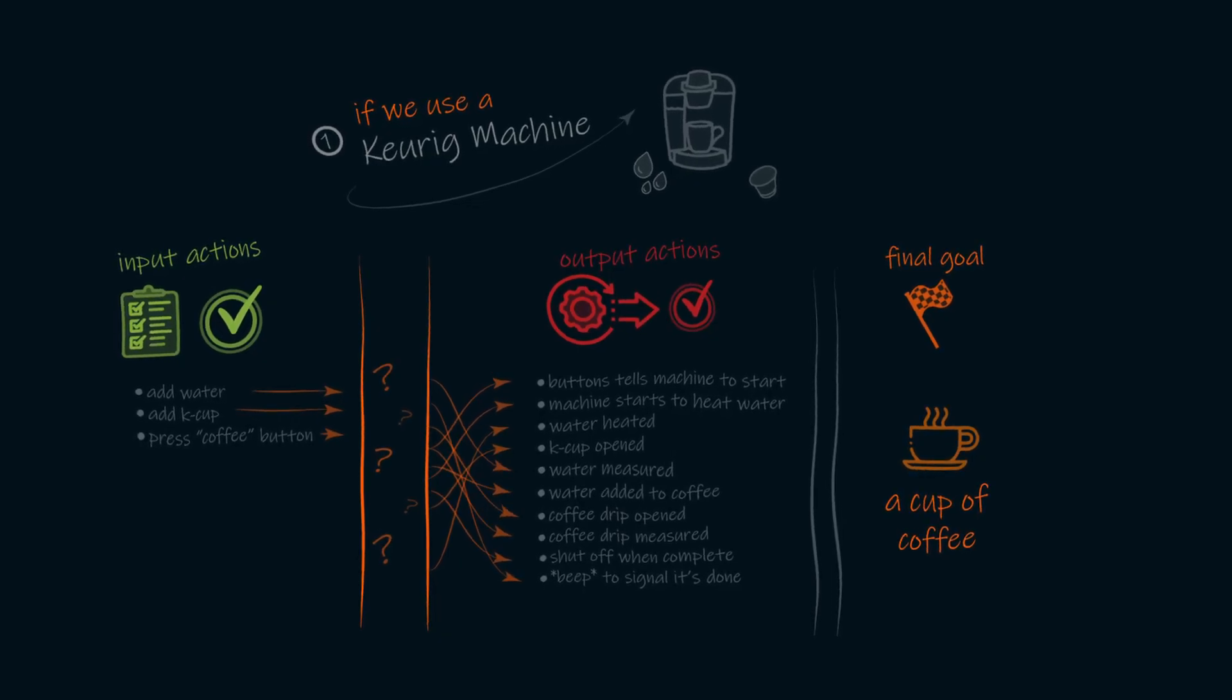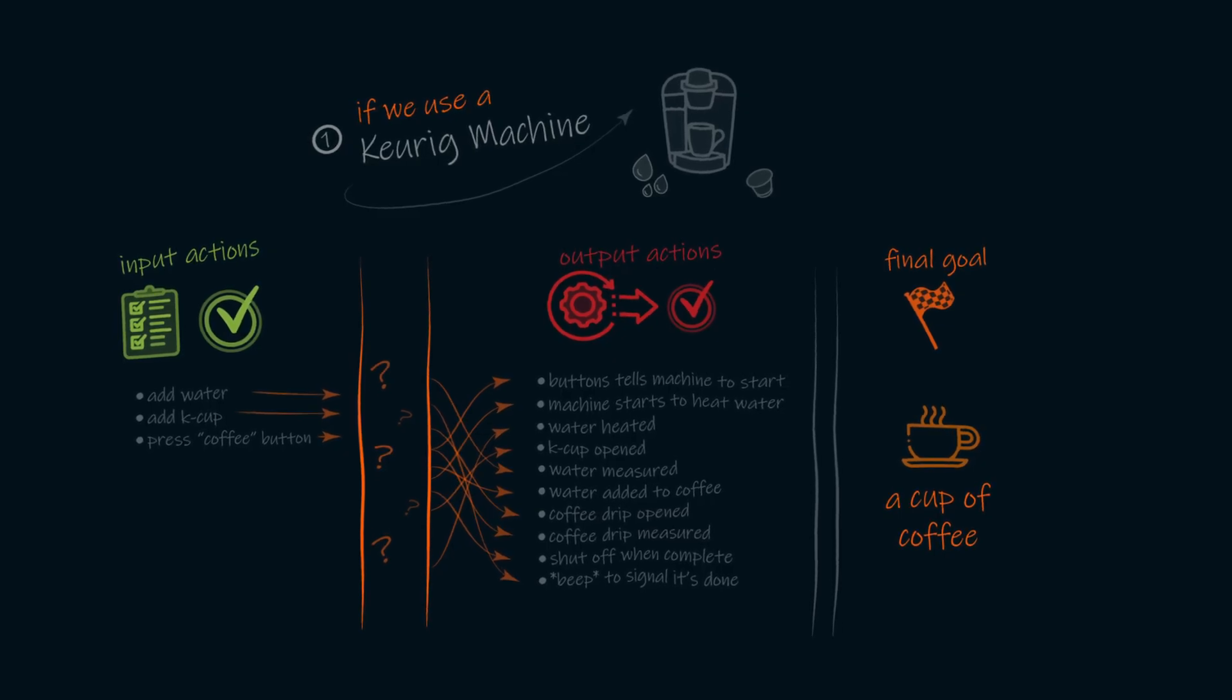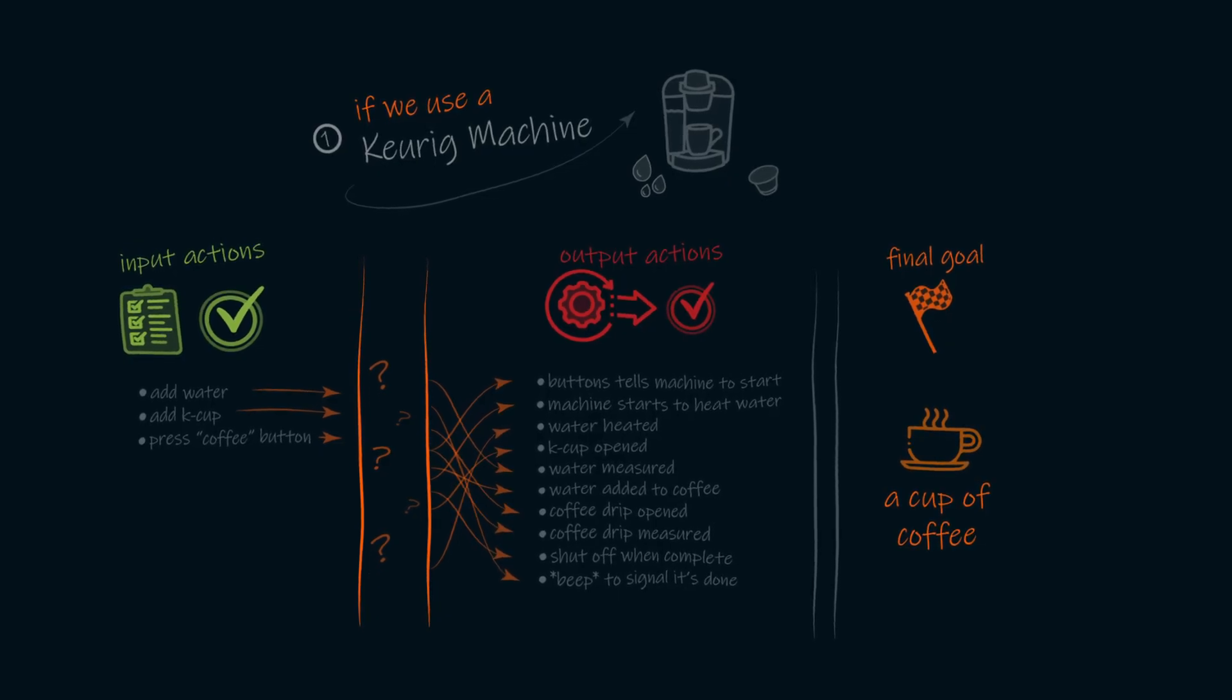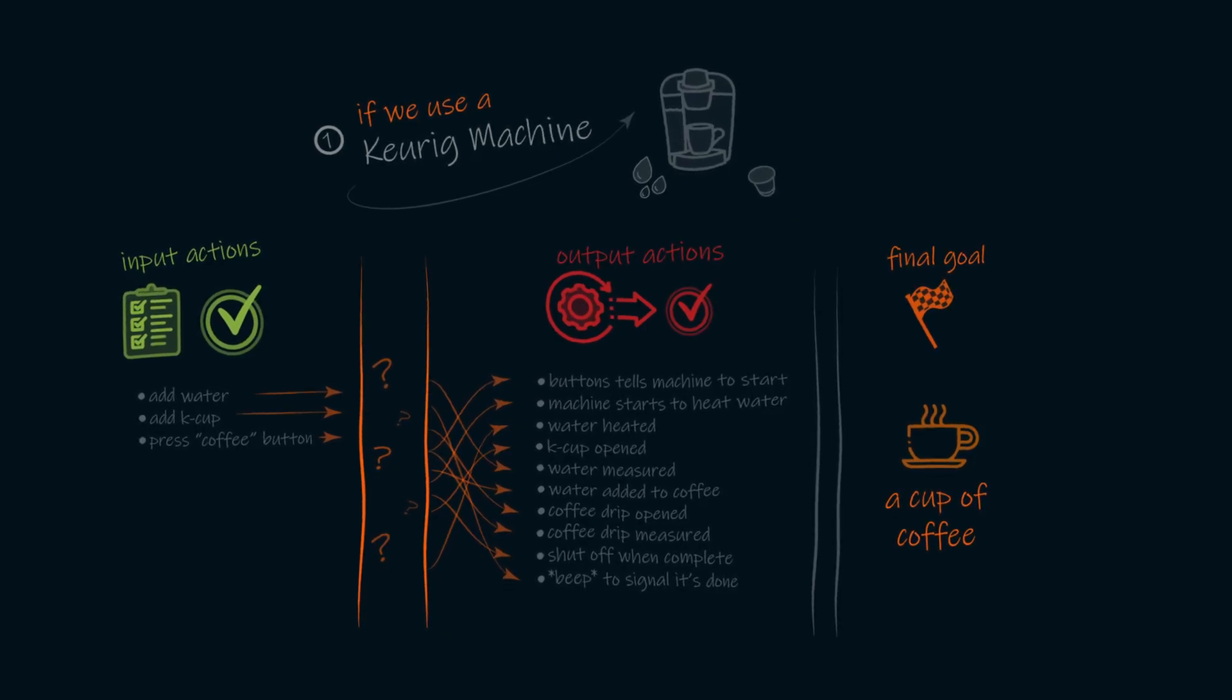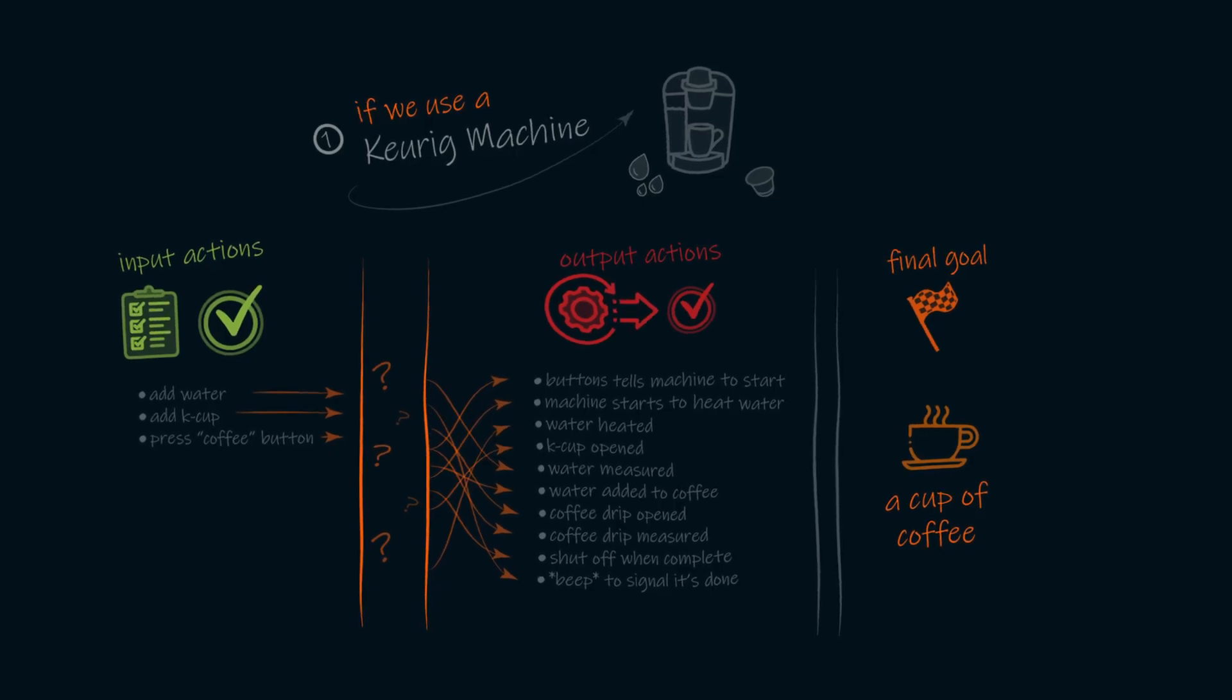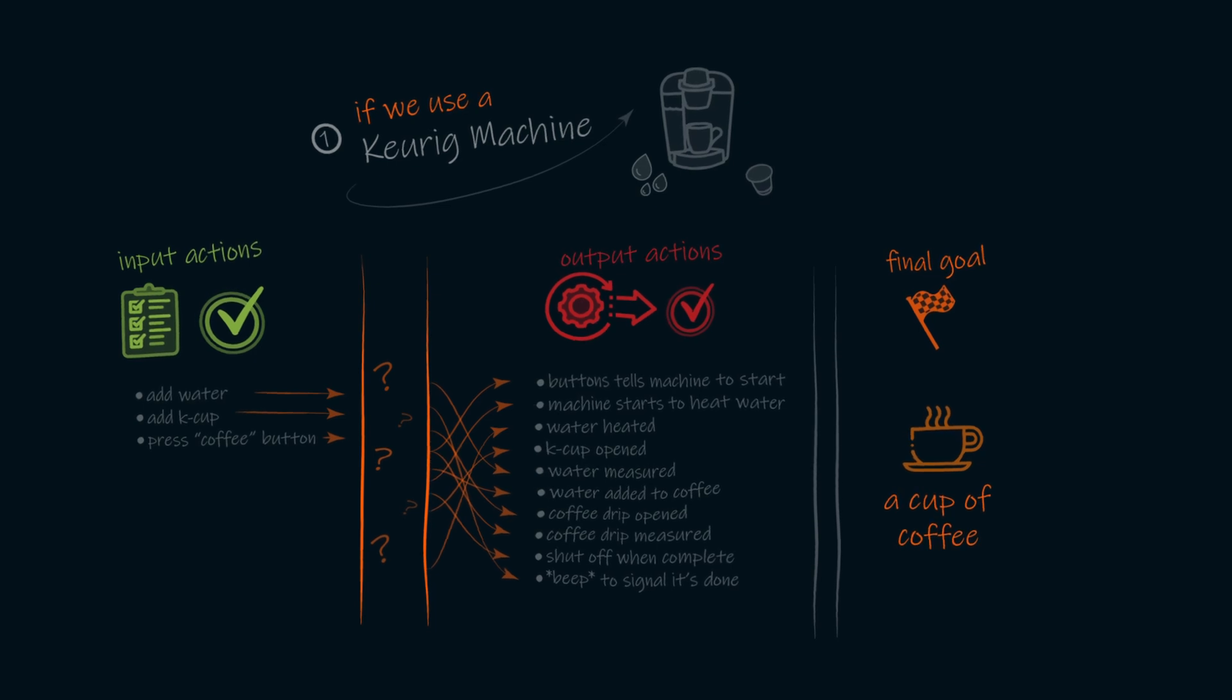In this case, we can see that although our input actions did result in the coffee being made, the difference between what we did as input and what the machine chose to do as output was hidden from us. We can't see how it translated this input to the output actions. So in this way, we can say that the Keurig machine has abstracted these details away from us.